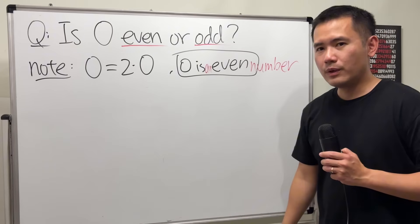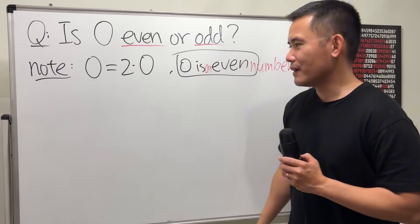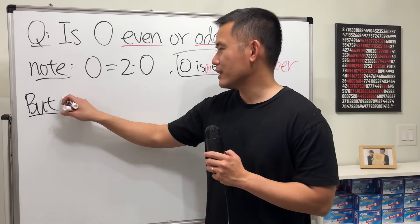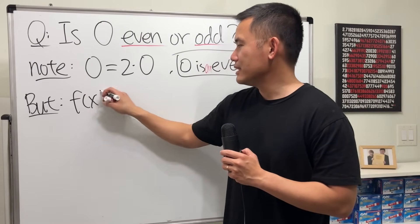Now, why did I say 0 is both even or odd? Well, I'm talking about the following. I'll just say but. Ready? If you look at the function, f of x is equal to 0.